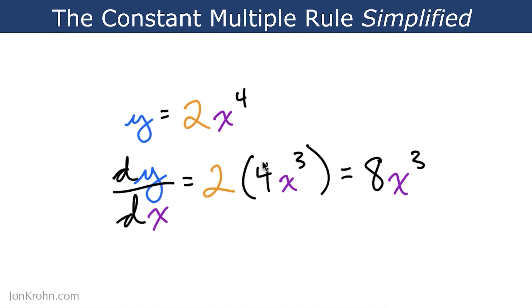And so we just perform that derivative operation while ignoring the constant. And after we've calculated the derivative, we bring the constant back into the picture, and 2 times 4x cubed, just like we saw on the last slide, is equal to 8x cubed.